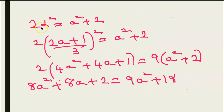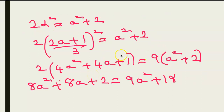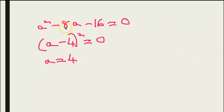Substituting alpha into the product equation: 2 × ((2a+1)/3)² = a² + 2, so 2(4a² + 4a + 1)/9 = a² + 2. Cross-multiplying gives 8a² + 8a + 2 = 9a² + 18, or a² - 8a - 16 = 0... wait, that factors as (a - 4)² = 0, so a = 4.